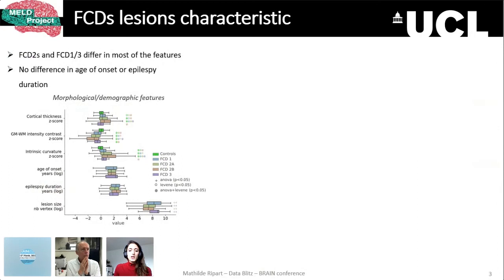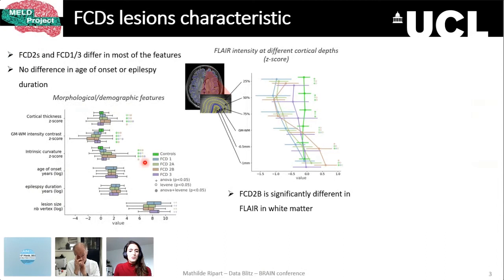We were also interested in the FLAIR intensity at different cortical depths. As you can see, all FCD subtypes present a hypointensity in the gray matter compared to controls, but only FCD2B presents a distinctive hyperintensity in the white matter, reflecting the transmantle sign.